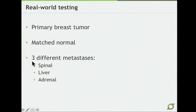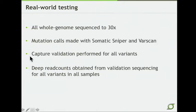We've done some real-world testing, and I want to tell you about one particularly cool dataset that we've been working with. This is a quintet of samples including a primary breast tumor, a match normal, and three different metastases from the spinal, the liver, and the adrenal glands. We whole genome sequenced all of these to 30x and ran them through our initial pipeline, prior to the development of BASIVAC. Capture validation was then performed for all variants, giving us very deep sequencing read counts across all samples.